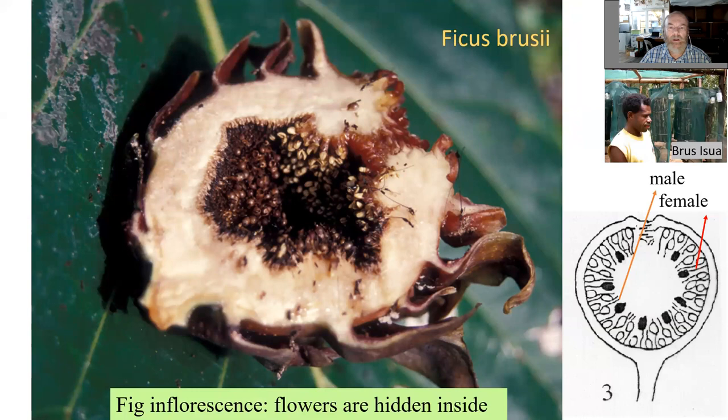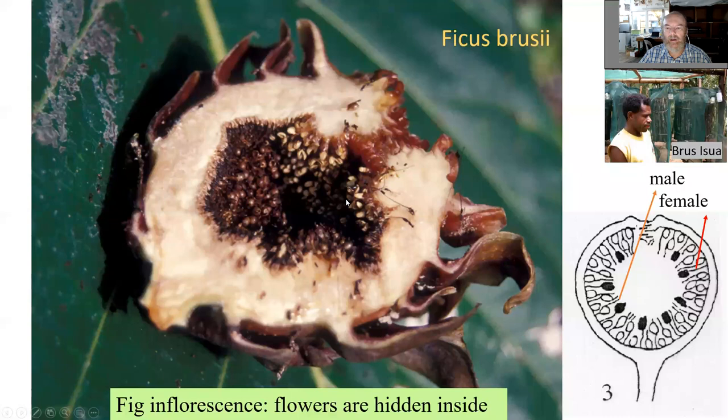This is how a fig looks when you cut it open — it's an inflorescence with the flowers inside the cavity. These are the flowers and this is the ostiolе, the only entry inside the cavity. This is a New Guinea species, ficus brusii, named after our collaborator and botanist Bruce Isua.